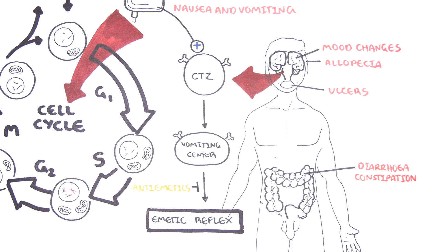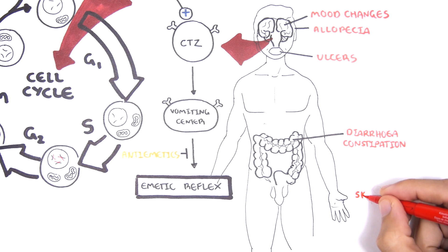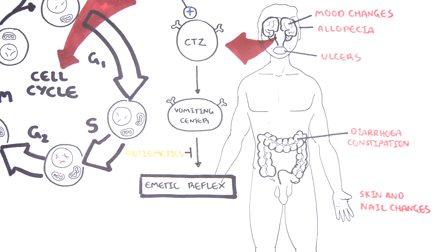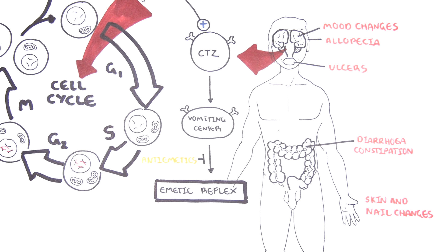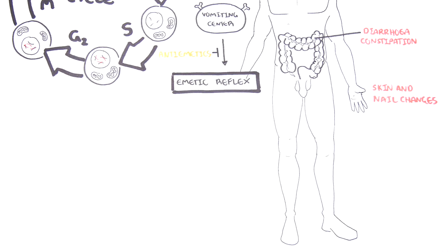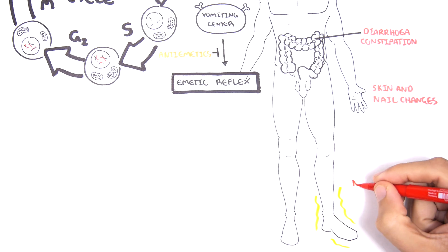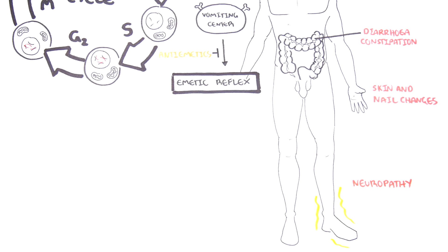Because hair and nails also have high turnover, chemotherapy agents can cause changes in skin and nails. Some agents can acutely cause side effects on the nerves — specifically those targeting the M phase of the cell cycle, such as vinca alkaloids and taxanes. These can cause peripheral neuropathy, presenting as sensory changes or pain in the peripheries.